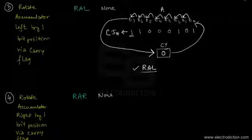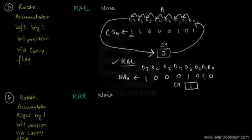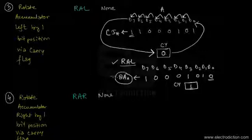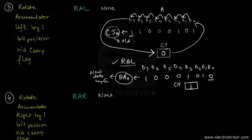The new accumulator data looks like this: since the carry flag bit (which was 0) is transferred to the D0 position, you have a zero at D0. And since bit D7 — which was 1 — has been transferred to the carry flag, the carry flag is now 1. The new accumulator data byte is 8AH, while the old data byte was C5H.